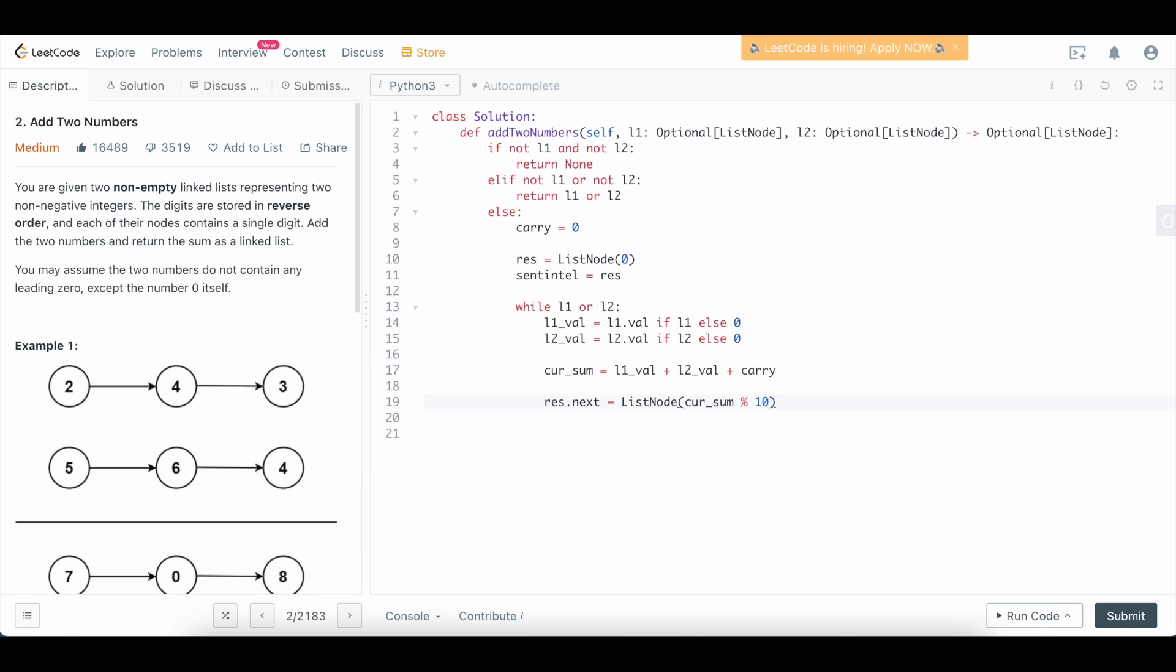Modulo 10 to extract that ones digit. And then we need to take care of the carry, so we're going to say carry equals cur_sum integer divided by 10 to get that ones digit.